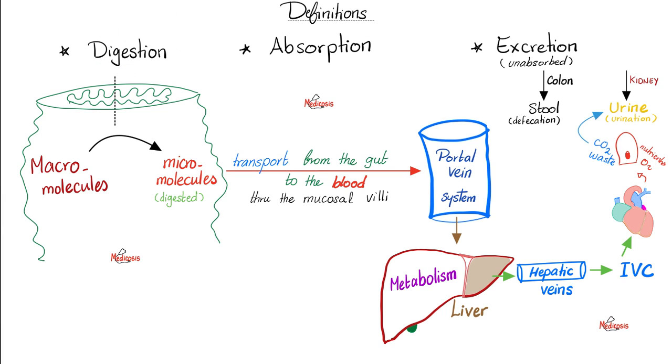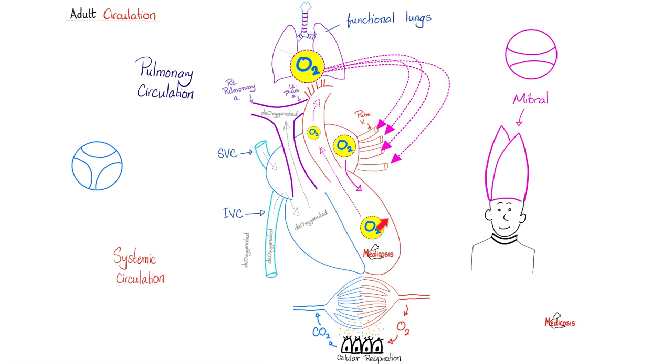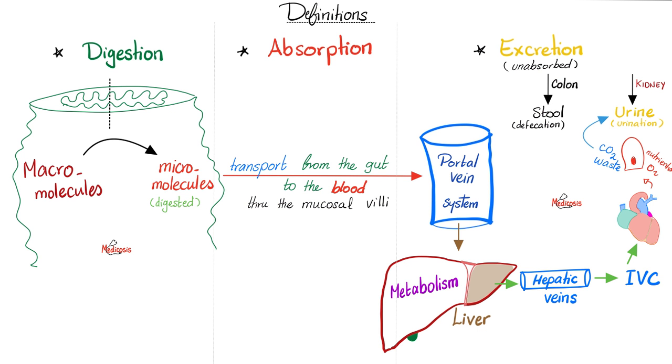Digestion is to break down macromolecules into micromolecules. These micromolecules are small enough so that you can absorb them to the bloodstream, i.e. the portal venous system, which will take it to the liver. The liver will metabolize what you ate and then put it in the hepatic veins, send it to the inferior vena cava, to the heart. Now you have doozy nutrients. You can send these nutrients with oxygen in arterial blood supply everywhere. As for the waste, you can send it to the kidney. If you were not digested and not absorbed, you will end up in the stool.